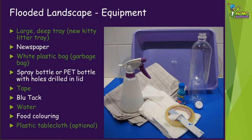To make a model of a flooded landscape you'll need the following equipment. First you'll need a large deep tray — something like a new kitty litter tray or a large baking dish are ideal. You'll also need some newspaper and a white plastic bag or sheet like a garbage bag. The plastic will need to be large enough to cover an area bigger than the tray. A garbage bag can be cut so it opens out into a larger sheet.